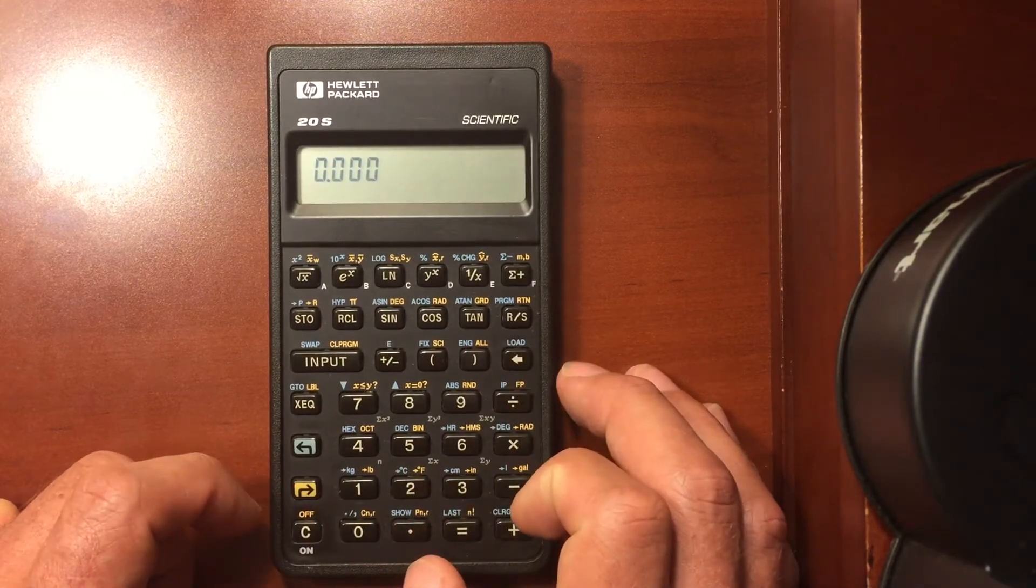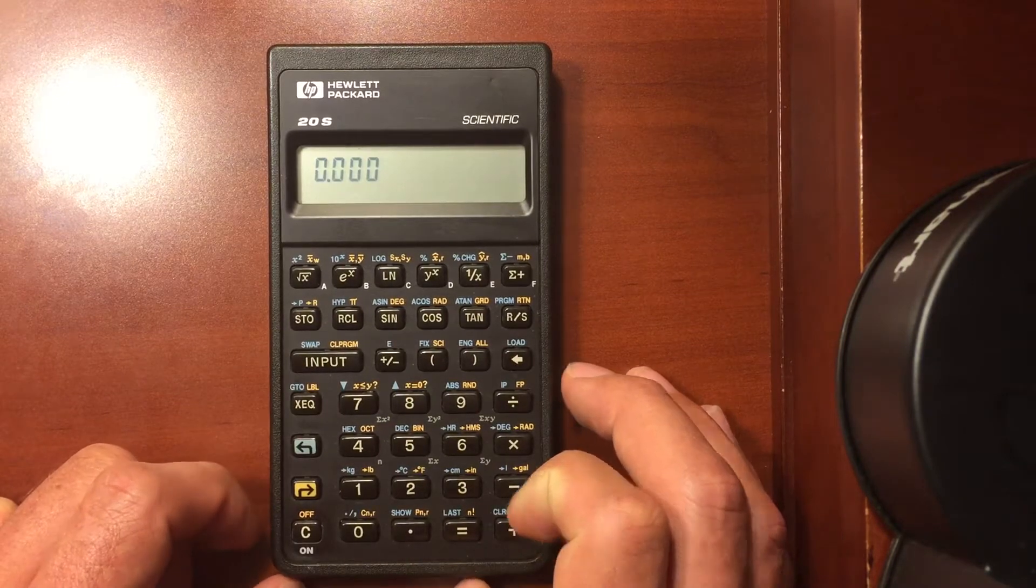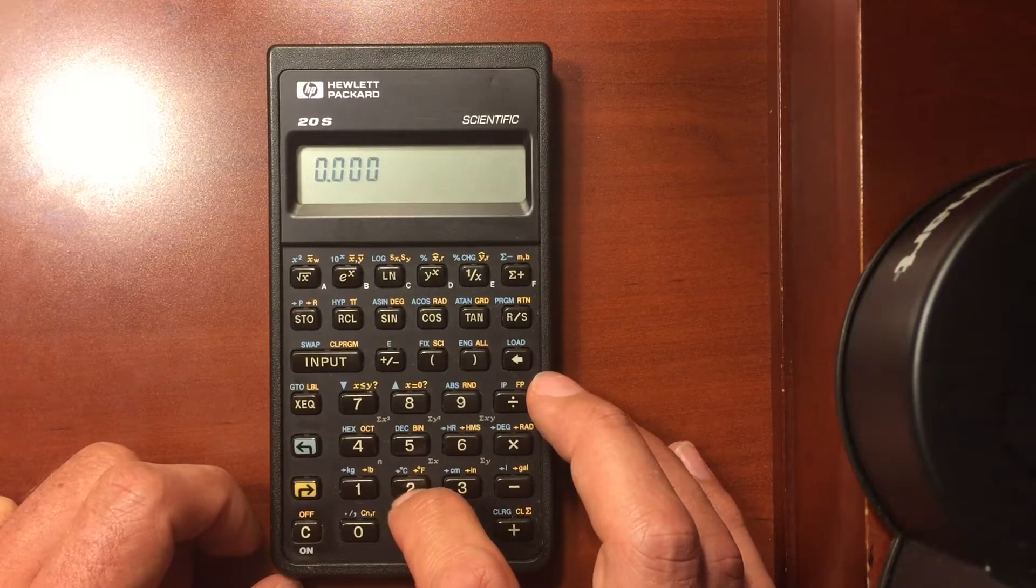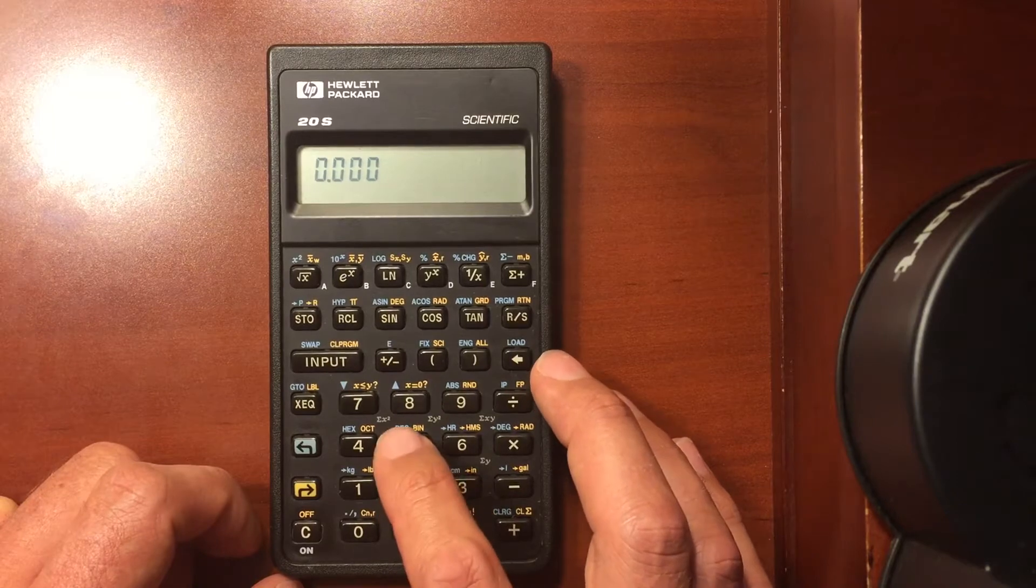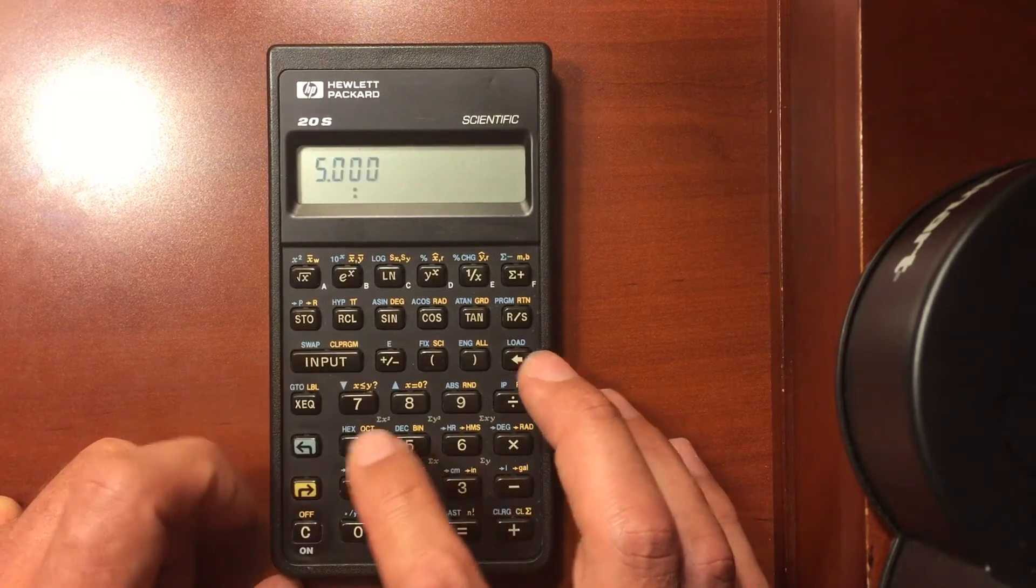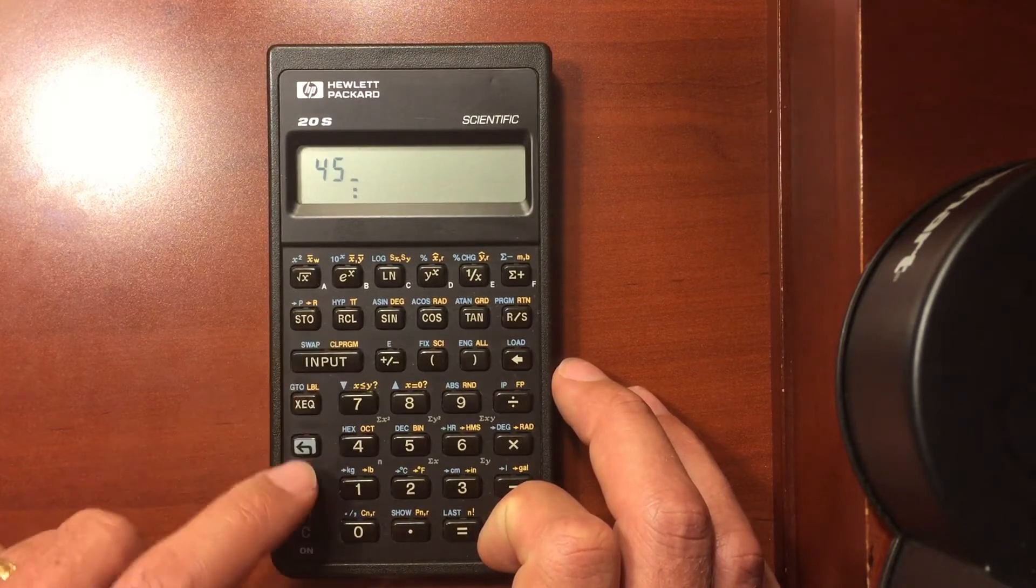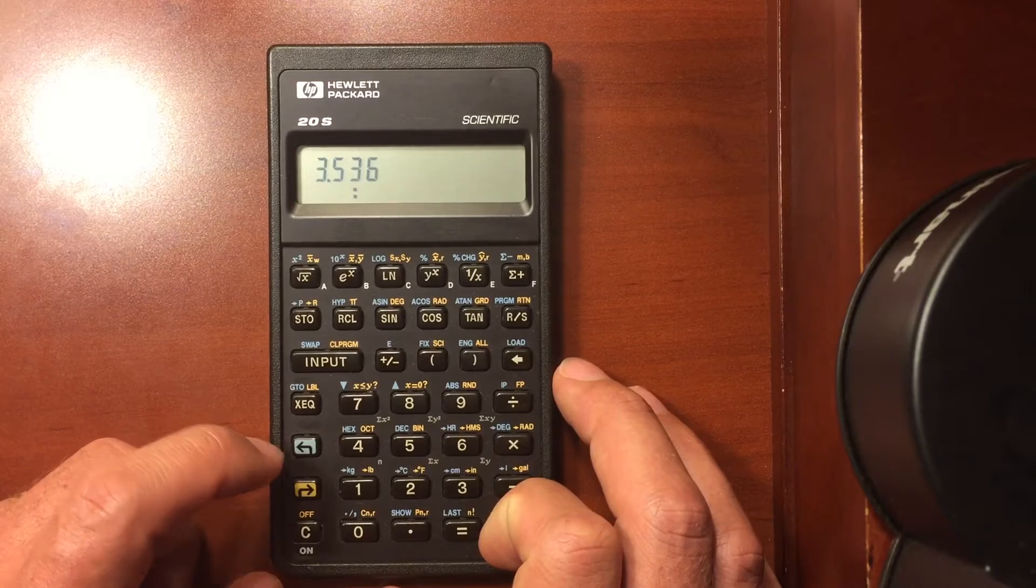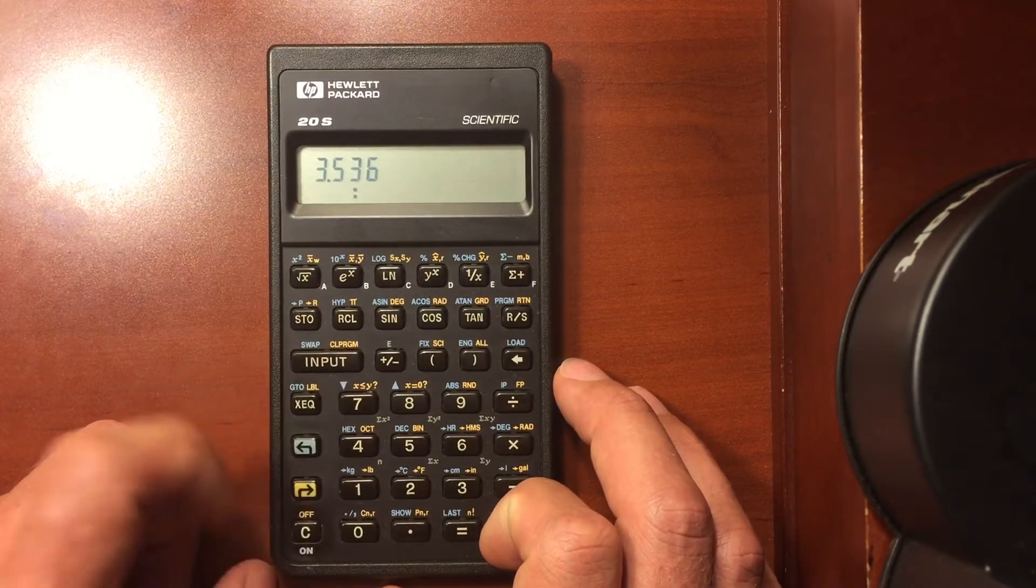Polar to rectangular conversion. Similar, I use the input button because I'm entering. These are two-number operations. So if I'm converting, say, let's go 5 at angle 45. And I'm going to convert that to rectangular. Shift to rectangular. That gives me 3.536. And we better have the same in the other register. Yep. Because we had a 45-degree angle.